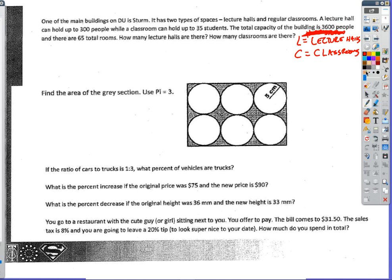Okay, so we know that the total number of lecture halls plus the total number of classrooms has to equal the total number of rooms, because that's all we got. And so that's 65. We also know that there are 300 people in a lecture hall plus 35 in a classroom for a total of 3600 people.